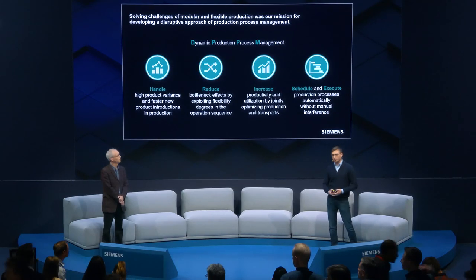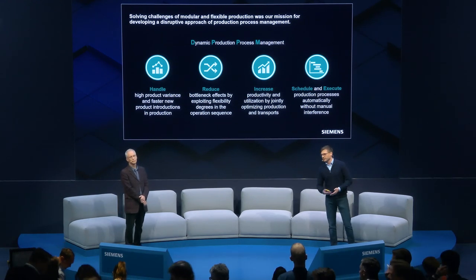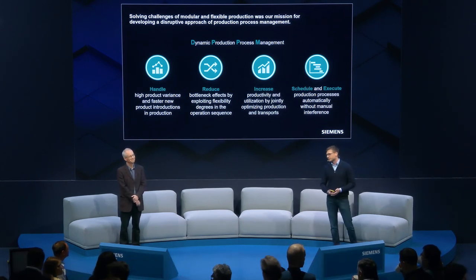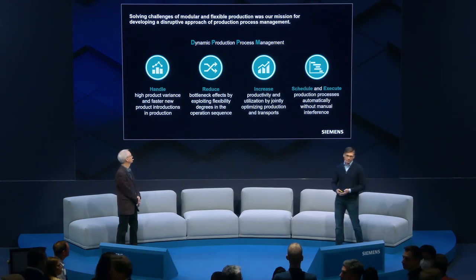So how can you benefit in such an environment from our system? With DPPM you will be able to handle a lot of product variants — high product variants with low effort — and accelerate the time between engineering a new product variant and executing it in production. We will also smooth your workflow by exploiting flexibility degrees of freedom in choosing machines and flexible workflows for each different product variant. By jointly planning and optimizing workstations and transportations, we will increase equipment utilization and boost productivity. Our intelligent autonomous planning approaches will plan and execute your production processes automatically without any manual interference, but with full transparency on decisions taken for subsequent analysis.